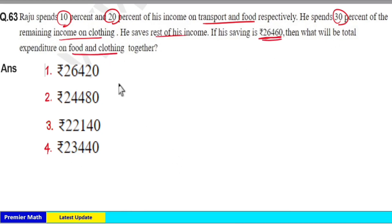He considered total income of Raju as 100 rupees. Now out of this 100 rupees, 10% he spent on transport, so 10% of 100 is 10 rupees he spent on transport, and 20% spent on food.